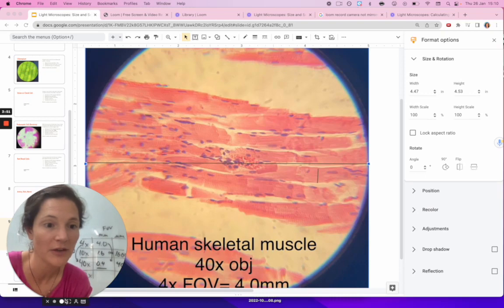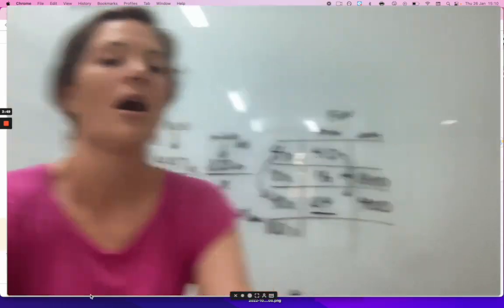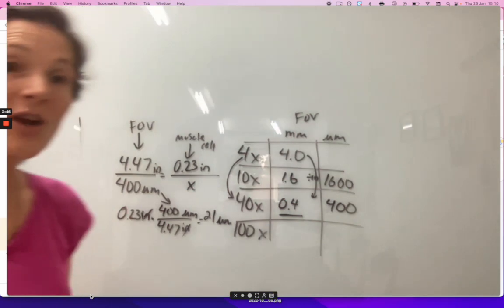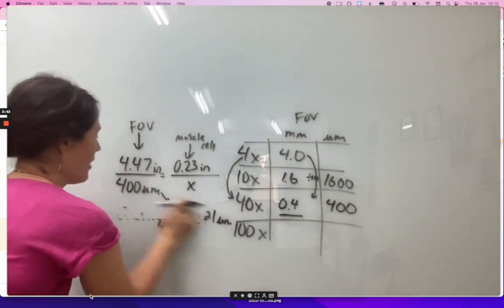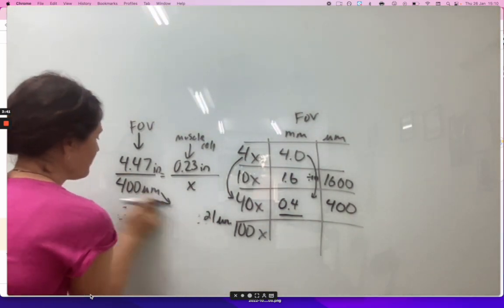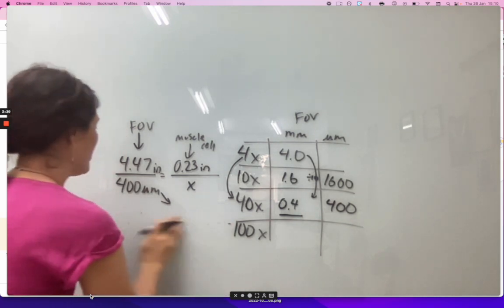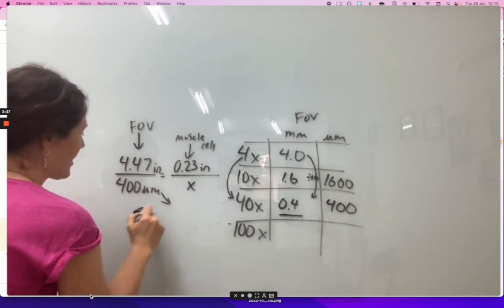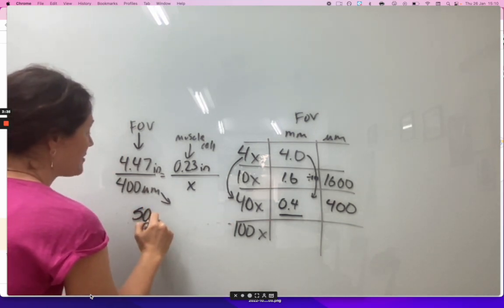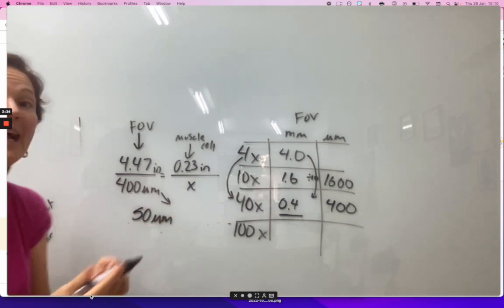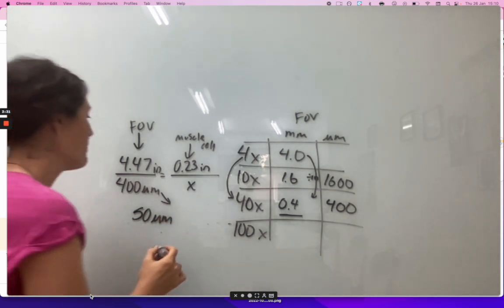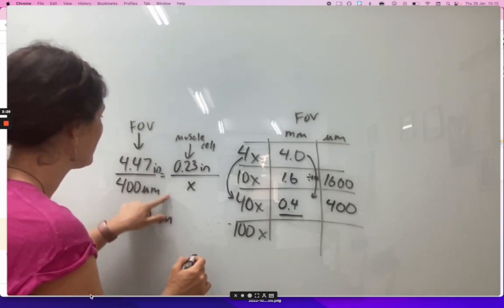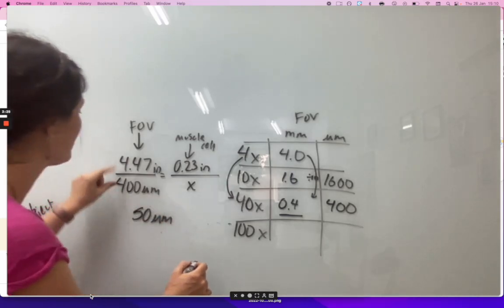Let me show you. It's similar to before, but now you'll start with a real size. I can say I think it would make sense to make a scale bar that is 50 micrometers, and I need to know how big to draw that. I can use this — I have information about the real size and the image size.